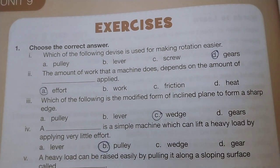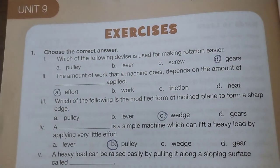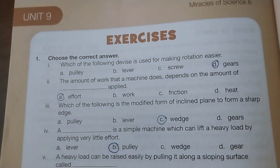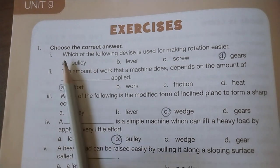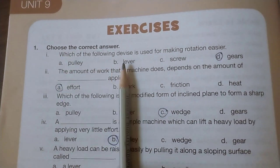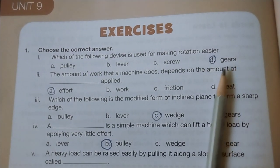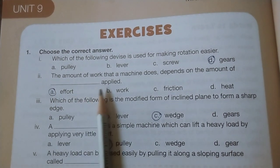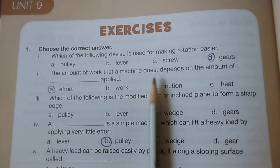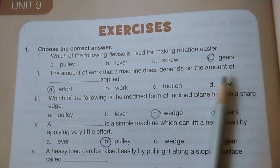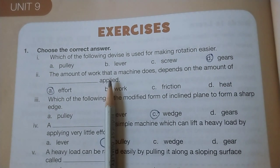Exercises: Choose the correct answer. Question 1: Which of the following device is used for making rotation easier? Question 2: The amount of work that a machine does depends on the amount of effort applied.